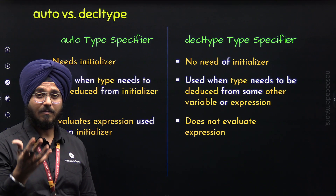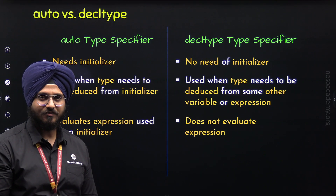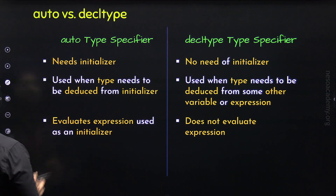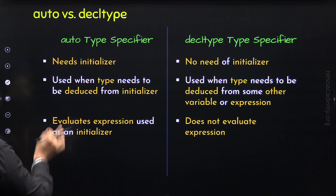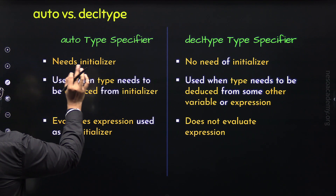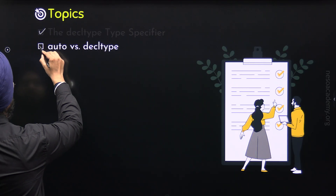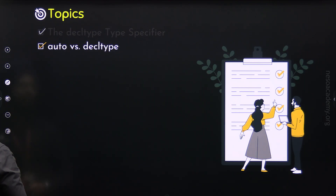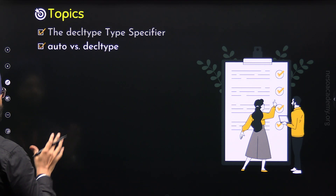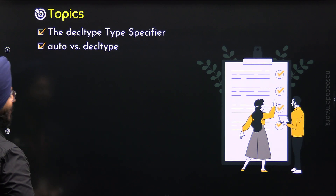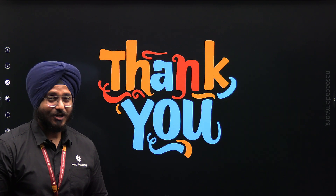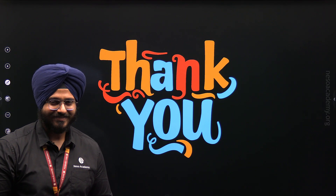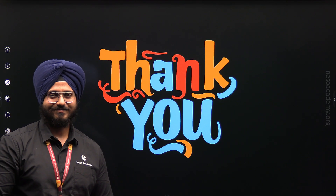There, we will get to know the importance of these type specifiers. With this, we have understood the difference between auto and decltype, and we are done with this lecture. Thank you for watching this presentation. I will see you in the next one.